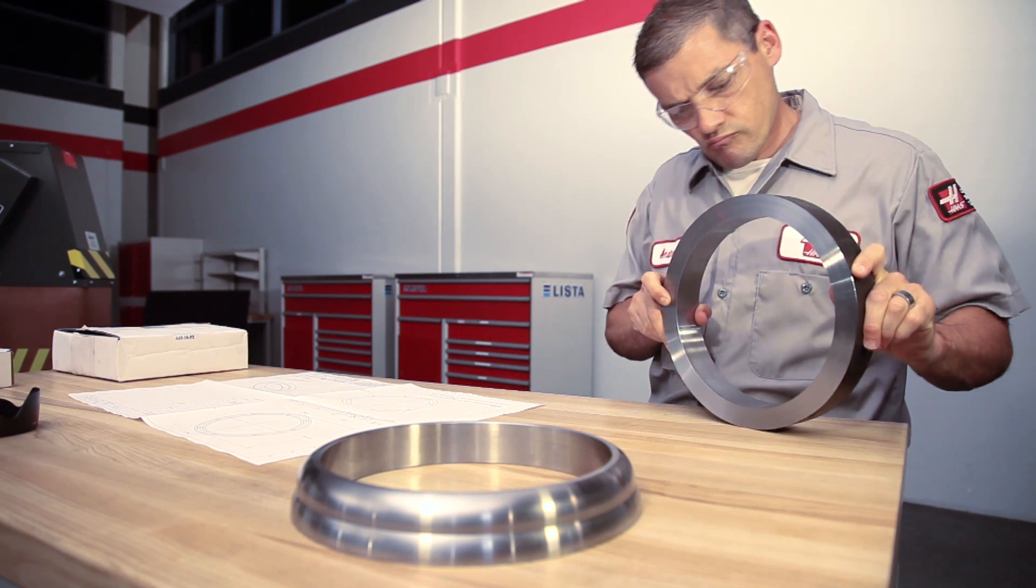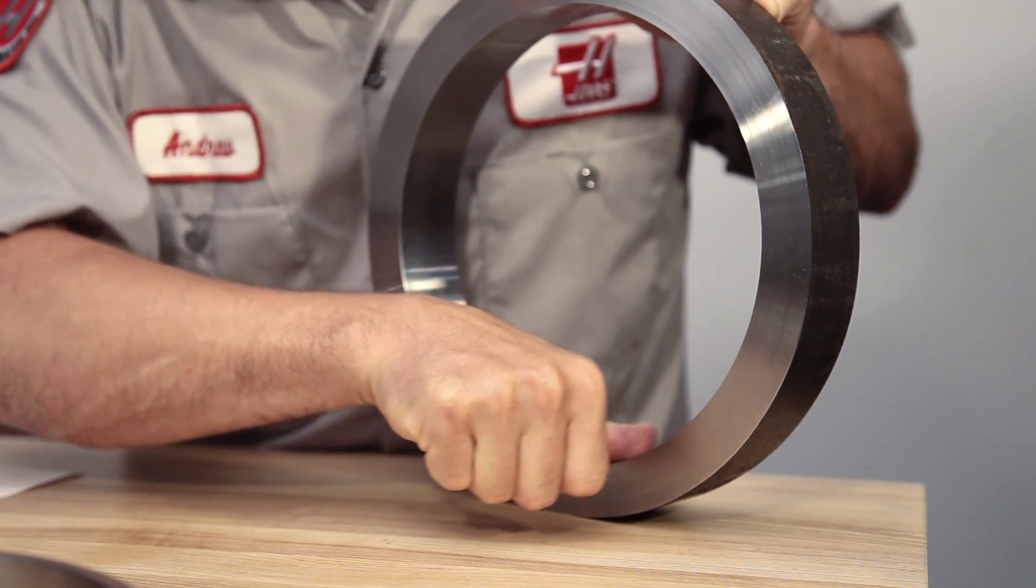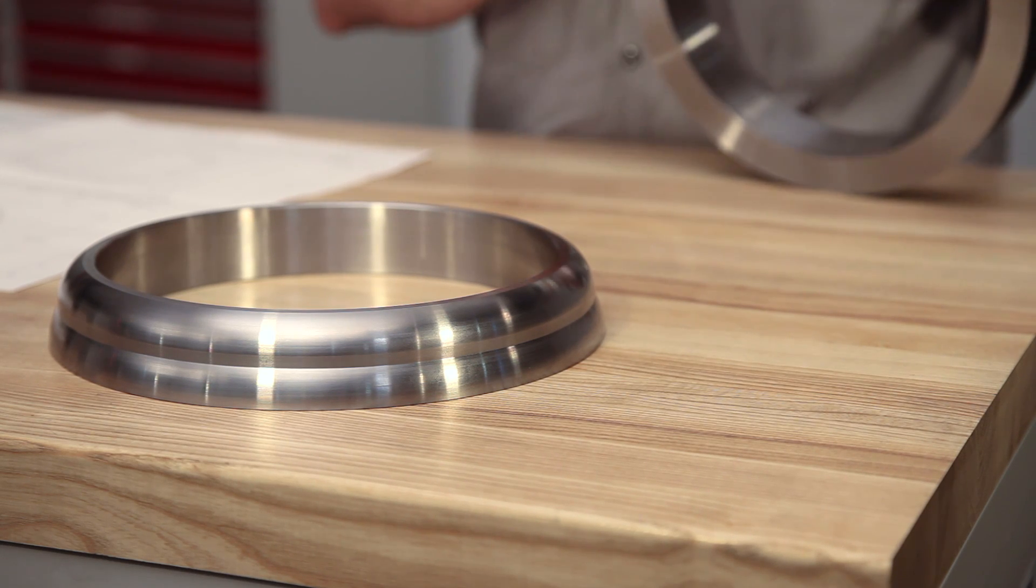The ID bore and back face of this ring cap were completed while the workpiece was OD gripped in the first operation. Since we need to machine curved surfaces on the parts outer diameter, we need to hold it with internal gripping jaws.